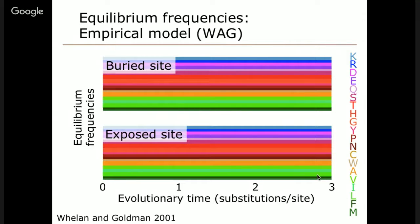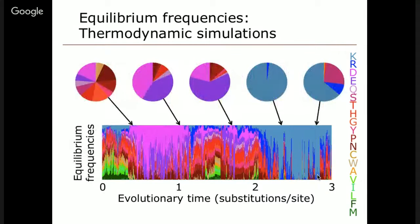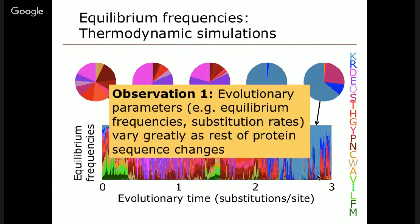With our simulations, we can calculate the instantaneous substitution rates at each site at each instant in evolutionary time, and we get a very different picture. We see differences in the affinities for different amino acids measured by equilibrium frequencies, and these vary quite a bit, being different for buried sites versus exposed sites. Represented as pie charts, there's quite a variation amongst the various sites showing different affinities. So one immediate observation is that evolutionary parameters — equilibrium frequencies and substitution rates — vary greatly as the rest of the protein sequence changes.